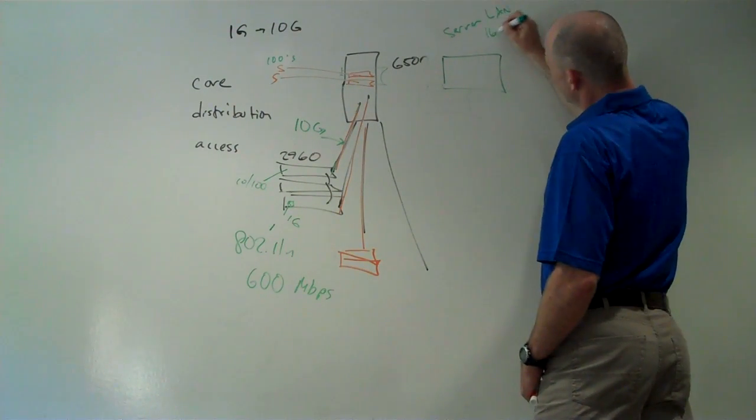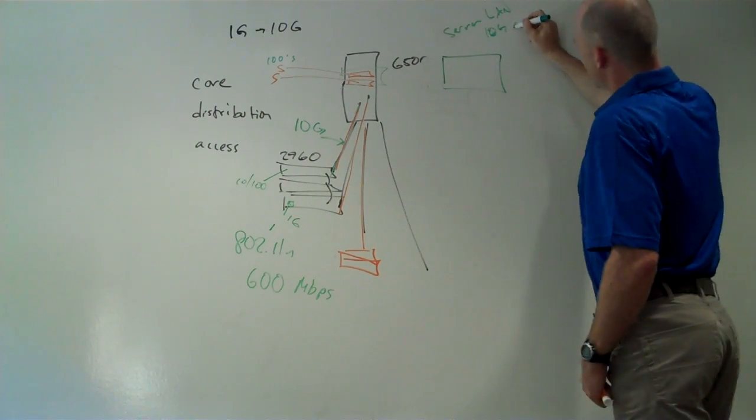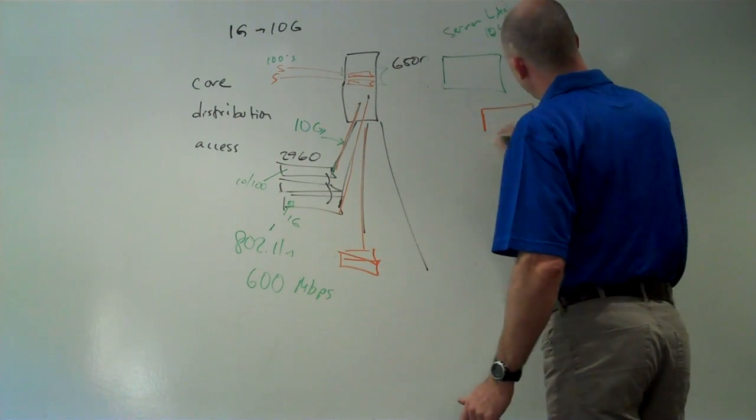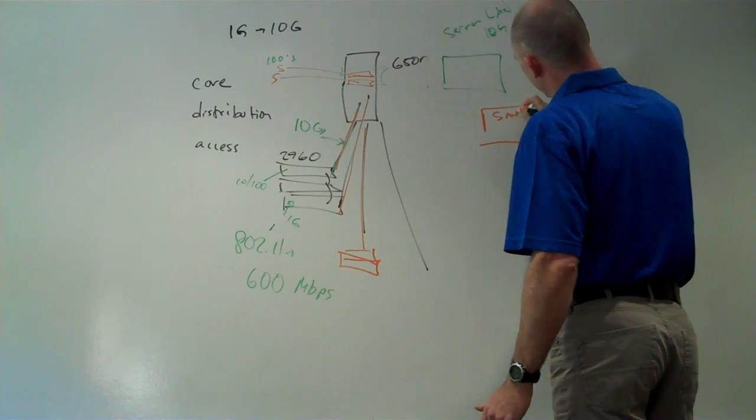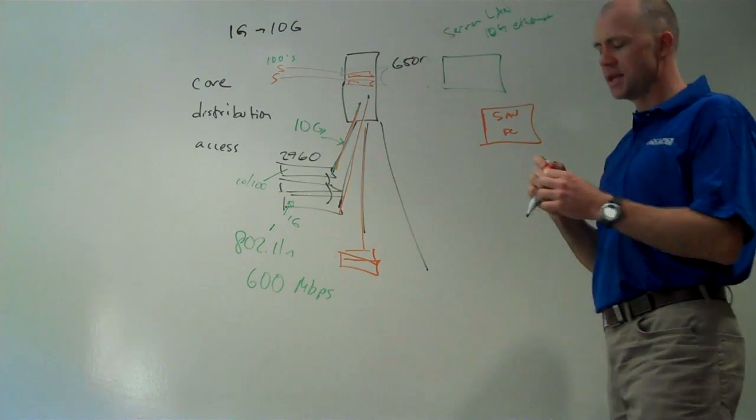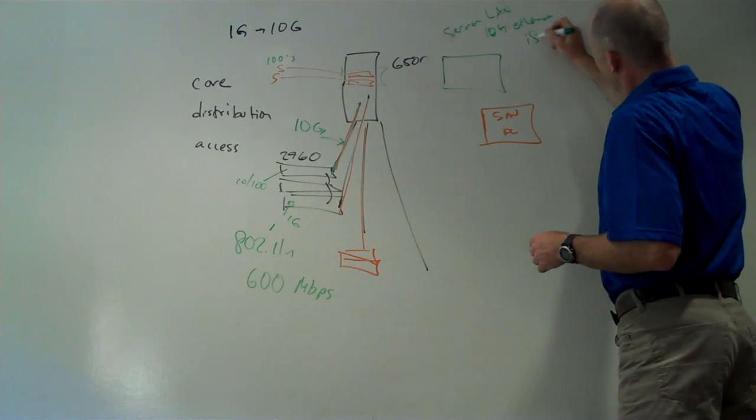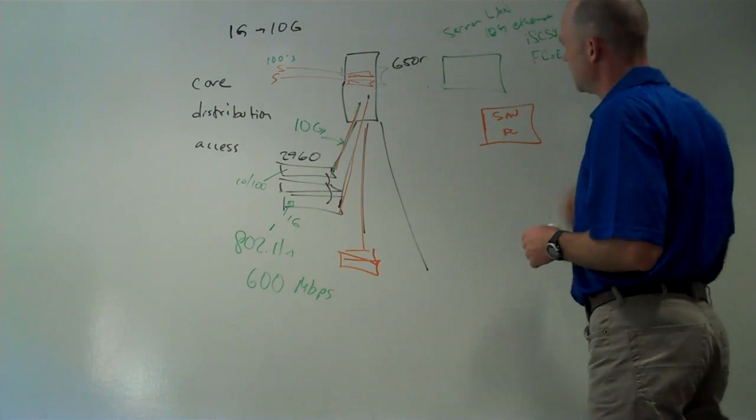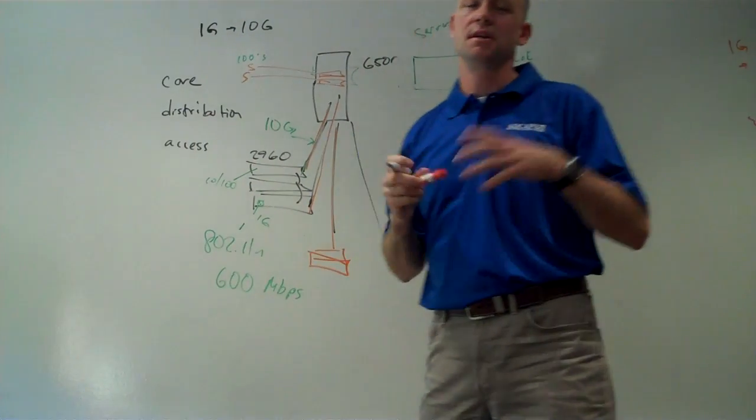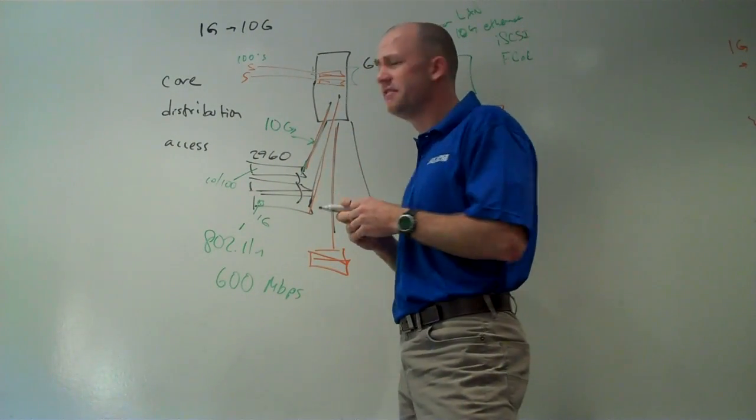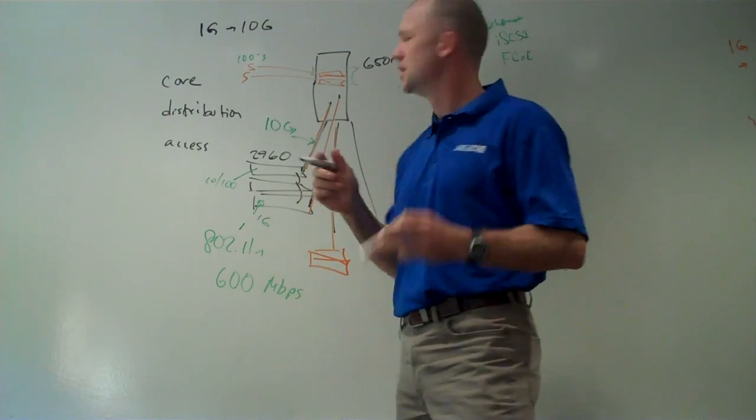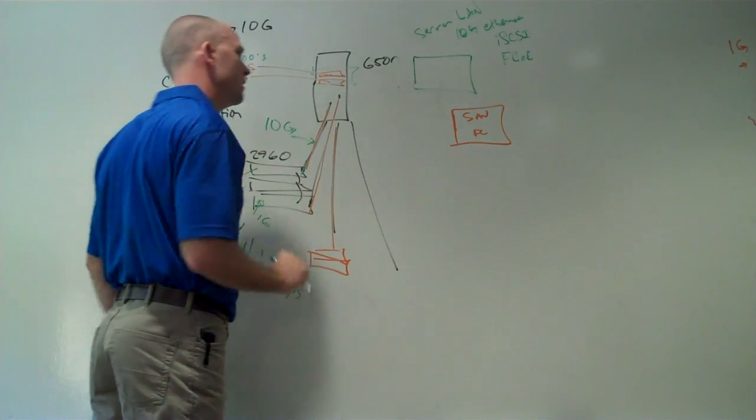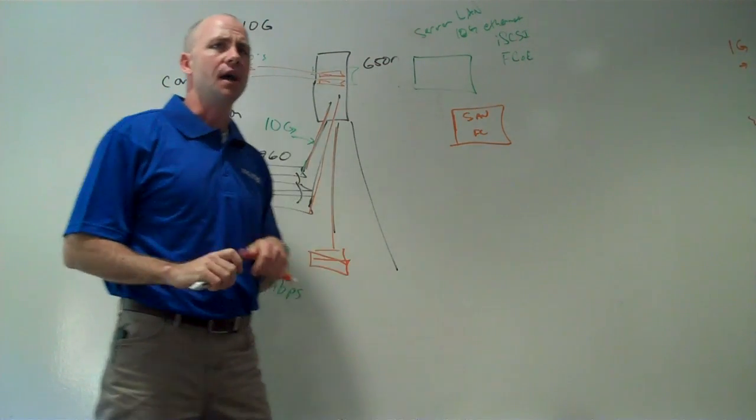So what we're ending up with is a separate server local area network that's dedicated 10GB for Ethernet. And in some cases we'll have a storage area network that's fiber channel. But even that in some cases is migrating over to iSCSI or even fiber channel over Ethernet. But still the basics of the high-availability network design stay in place with the access layer, the distribution layer, the core layer, but we're adding the server and storage element to it as well.